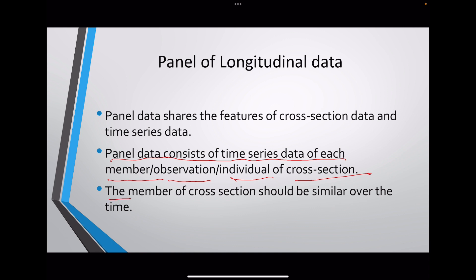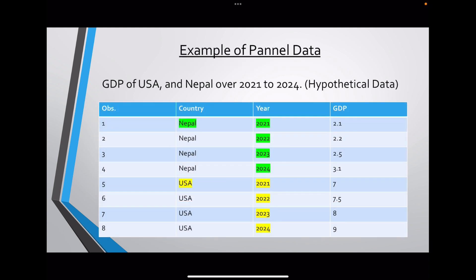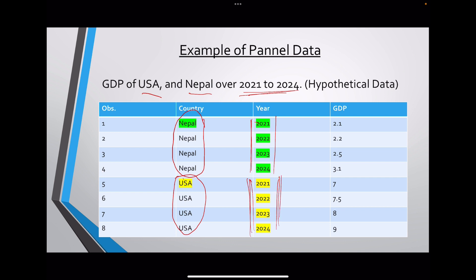An important point is that the members of the cross-section should be similar over time. For example, GDP of USA and Nepal over 2021 to 2024 is an example of panel data. Here the members of the cross-section — USA and Nepal — are similar over time, which is why this is panel data.